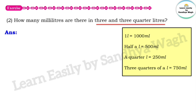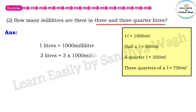Now let us find the answer. For 3 litres: 1 litre is 1000 millilitres, so 3 litres is 3 multiplied by 1000 millilitres, which gives us 3000 millilitres. For the 3 quarter litre portion: 3 quarter litres equals 750 millilitres.